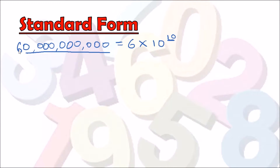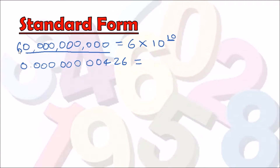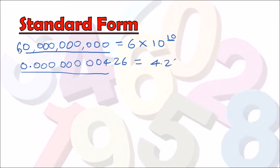Another example: writing something really small, like 0.000000000426. For small numbers we use a negative power because we're going towards zero. We count the zeros: 1 plus 3 plus 3 plus 2 gives us nine zeros altogether. So we write 4.26 times 10 to the power of negative 9.